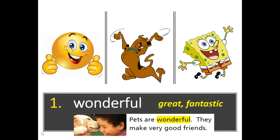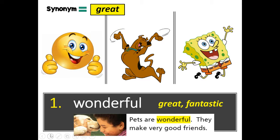In your next column, write a synonym — a word that means the same. A synonym for 'wonderful' is 'great' — g-r-e-a-t. So number one is 'wonderful,' and a synonym for wonderful is 'great.' Think about it: what is something wonderful that happened this week? You're going to write the word 'wonderful,' then write the synonym 'great' right next to it, and at the end of the lesson draw a quick sketch or picture that goes with wonderful and great.